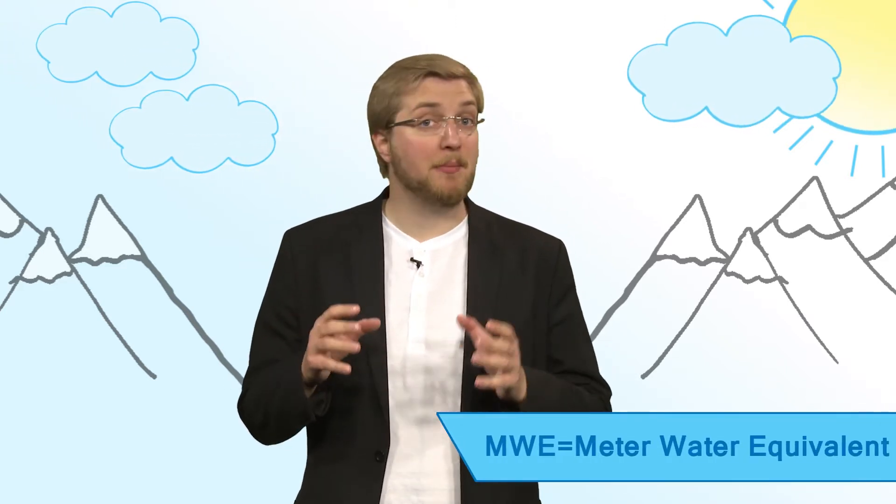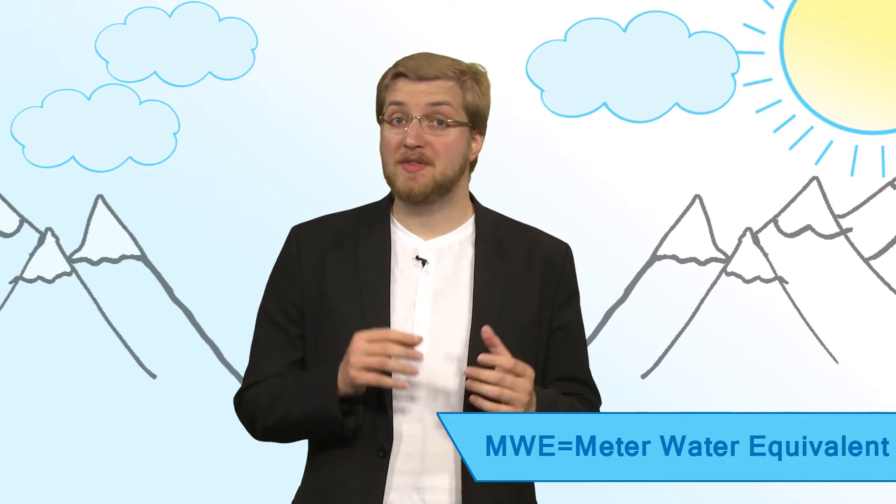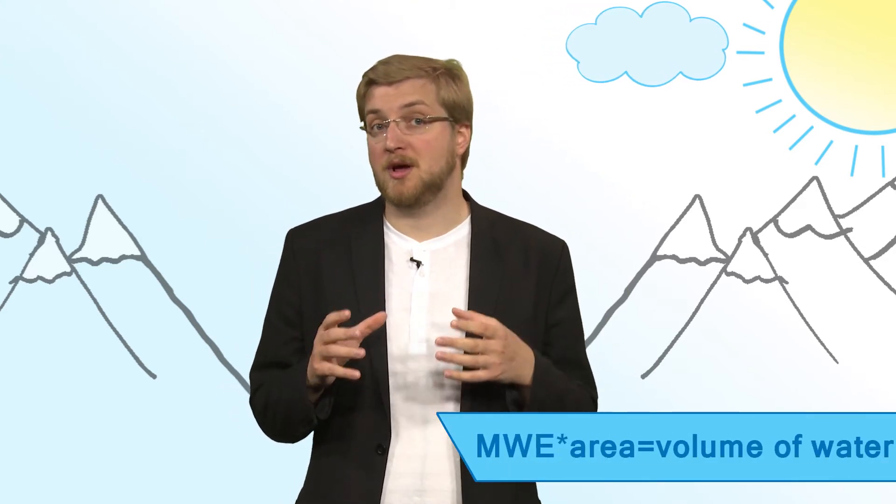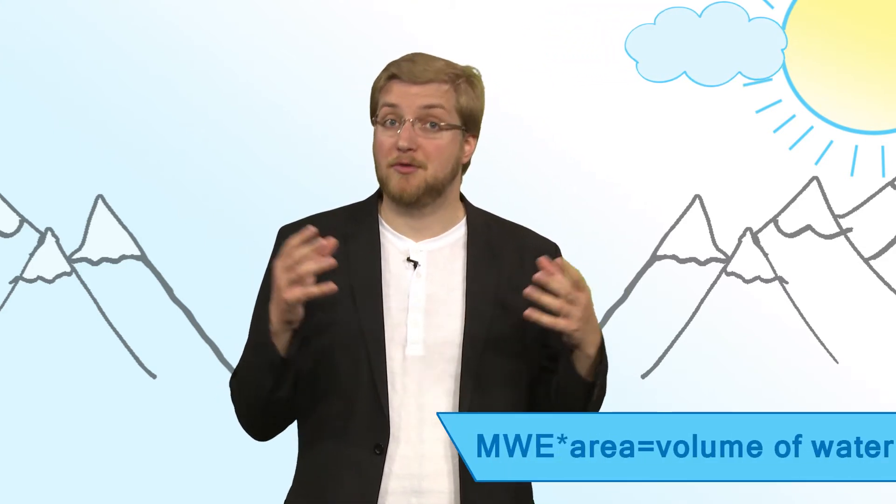The mass balance of a glacier is given in meter water equivalents, MWE. To understand what this means, let's say that the glacier is melted to a lake. The MWE is the measurement of how much the lake's surface altitude would change. To compute what this represents in terms of volume of water over the entire glacier, one needs to multiply that value by the area of the glacier.